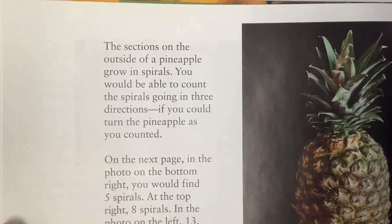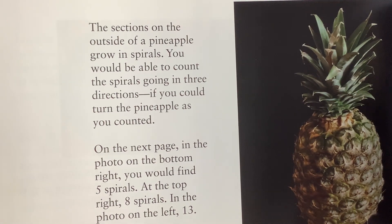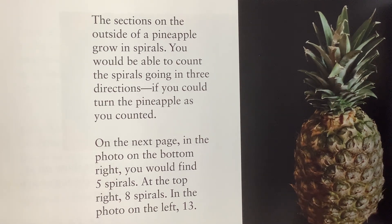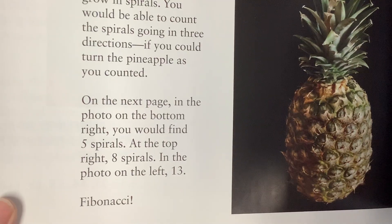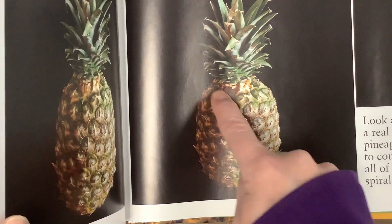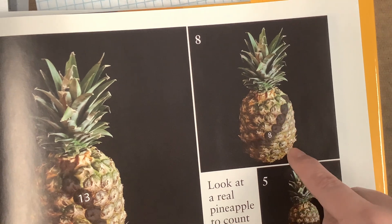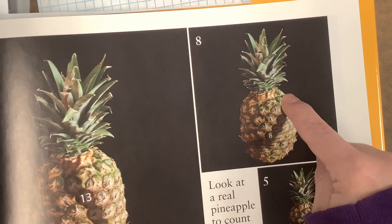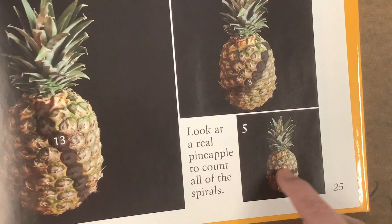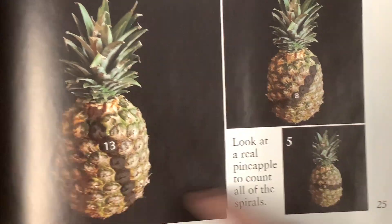Pineapples too! The sections on the outside of a pineapple grow in spirals. You would be able to count the spirals going in three directions if you turn the pineapple. If we scan one way there are 13 stripes going that direction. Going a second way there are 8. And going kind of straight around there are 5. All Fibonacci numbers!